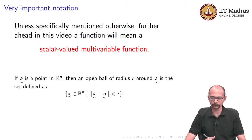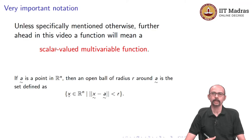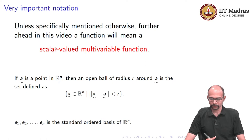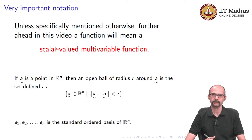One more thing to know: if ã is a point in ℝⁿ, then an open ball of radius R around ã is the set of all x̃ in ℝⁿ such that the distance between x̃ and ã is less than R. In ℝ², this means a disk of radius R around the point ã — all those points within the circle of radius R. Also, e₁, e₂, …, eₙ is the standard ordered basis of ℝⁿ, which we studied in the linear algebra part, and we will have use for these standard basis vectors in what comes next.